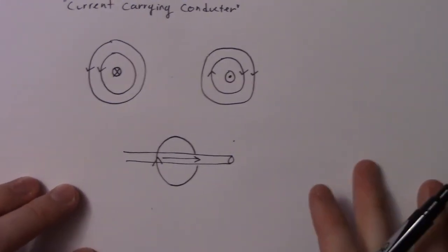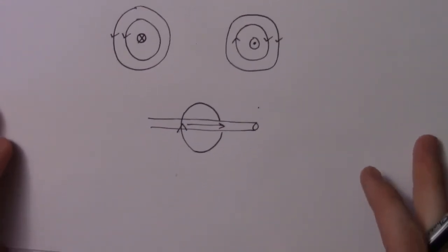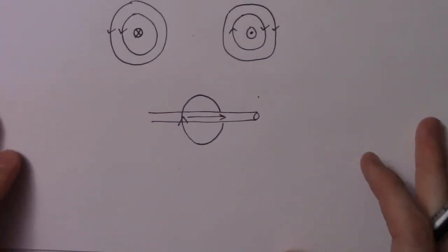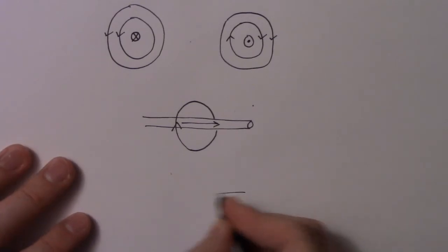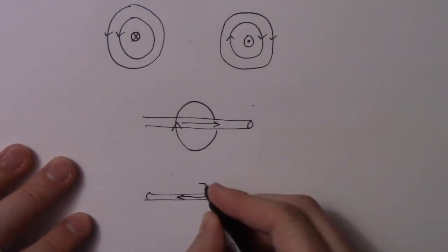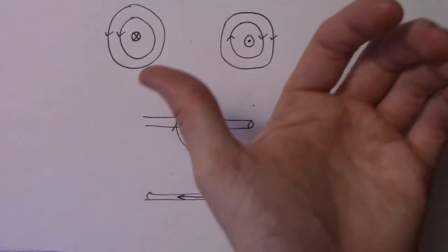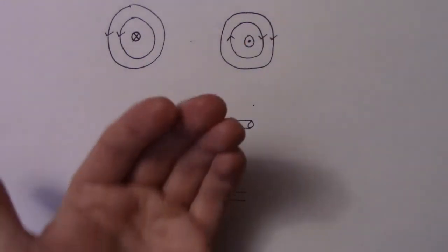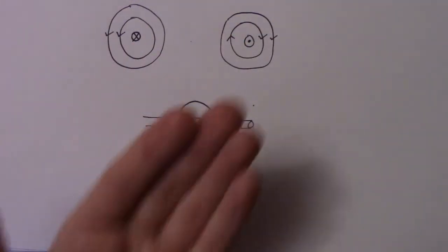Now the other scenario would be if you have the wire with the current going in that direction. So obviously I just turn my hand this way. So it's going around the back like that, and then up the front.